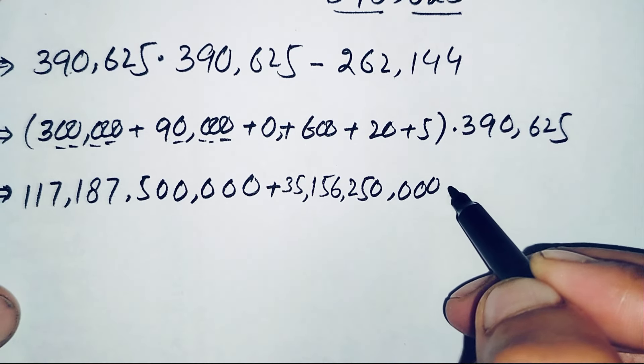Now we add all these partial products together, starting from the ones position and adding digit by digit through all positions. This gives us 152,587,890,625.